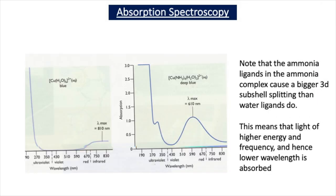In our previous video lessons, we've also learnt that evidence for these D-D level transitions comes from absorption spectroscopy. In these spectra, you can see that blue light is being reflected as there's no absorption occurring in the blue end of the spectrum, and light from the red end of the spectrum is being absorbed. When we change the ligands, what's happening is we're changing the D-level splitting and therefore absorption is occurring at a different frequency and wavelength.